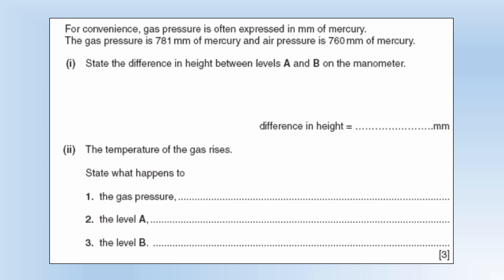So if we've got these two values state the difference in height between the two levels. Well we can just do a basic subtraction calculation to get 21 millimeters.